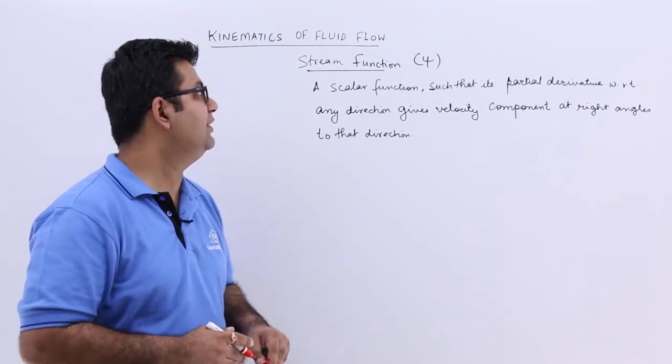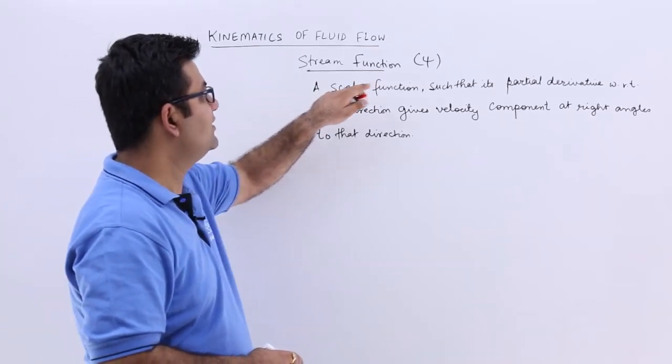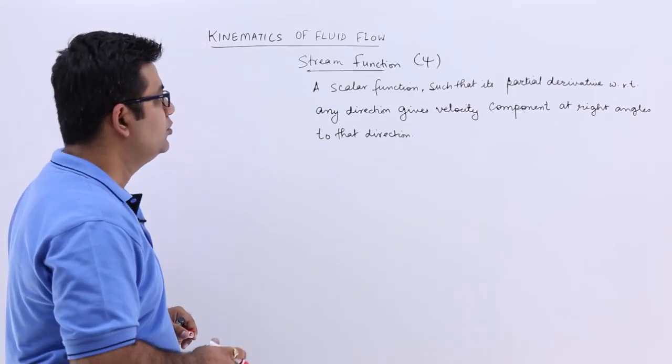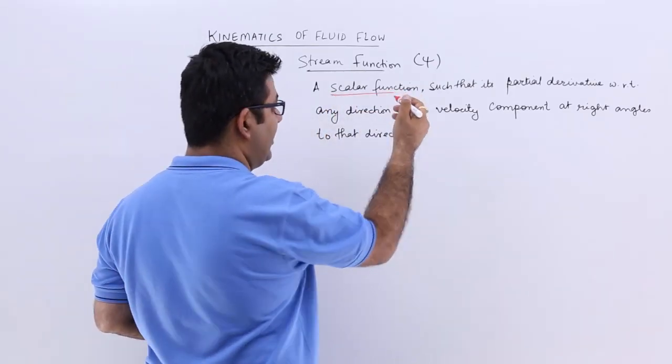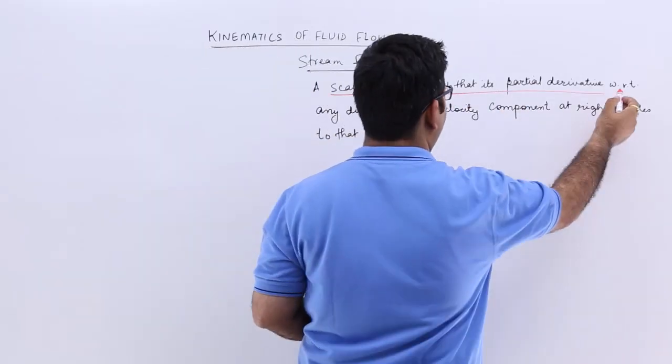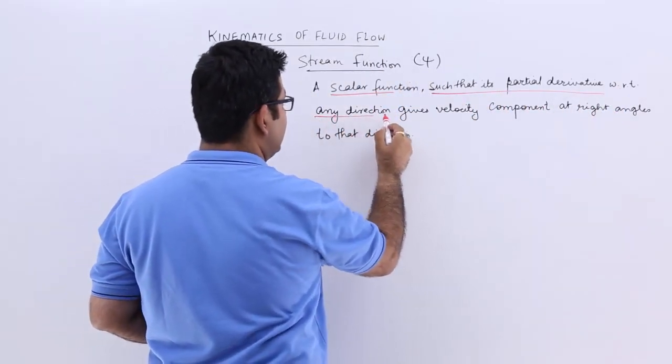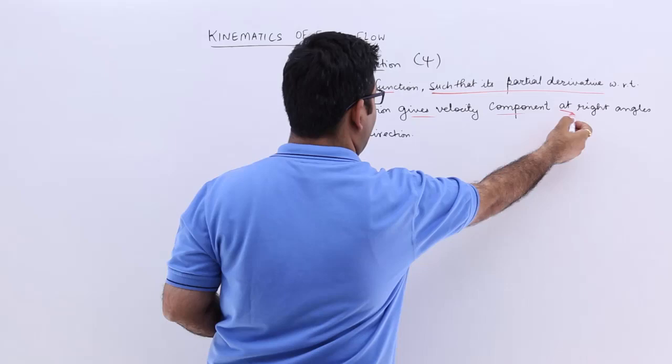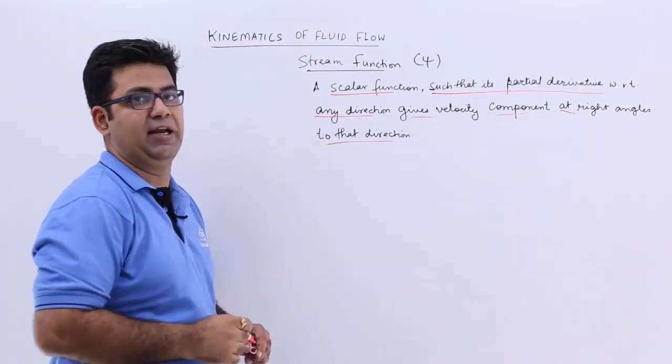Now let's talk about the stream function which is denoted by a symbol psi. It is a scalar function in space and time, such that its partial derivative with respect to any direction gives velocity component at right angles to that direction.